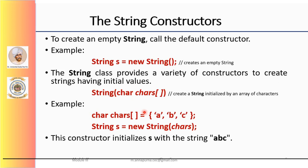Now let's look at the string constructors. The String class supports several types of constructors in Java. The most commonly used constructors of the String class are as follows. To create an empty string we call the default constructor — for example, String s = new String(). This creates a string object in the heap area with no value, that is, a string object is being created with no characters in it, so s is an empty string. Now suppose we want to create strings that have initial values — the String class provides a variety of constructors to handle this.